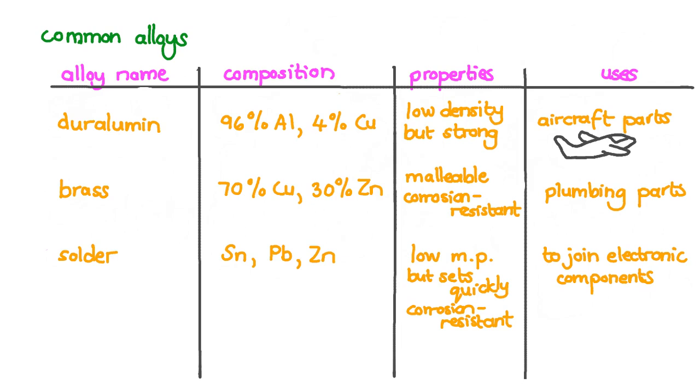Solder is a tin, lead and zinc alloy. It melts easily but sets quickly and is also corrosion resistant. Solder is used to join electronic components. The melting point of a particular solder depends largely on the content of tin. The relative proportions of copper and zinc in brass affect the properties of a particular brass. And the aluminum and copper ratio in duralumin will influence the density and strength of the material. Can you see that the percentage of the components in an alloy directly influence the properties of that material? And these percentages can be changed.